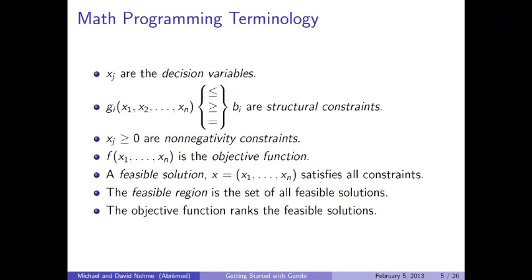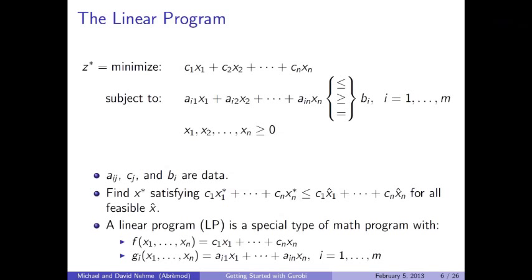A linear program is a special case of the mathematical program in which both the objective function F and the functions in the constraints are required to be linear in the decision variables. The variable coefficients A and C, as well as the right-hand side B, are fixed data known ahead of time. Our goal is to find an optimal solution X* such that when evaluated by the objective, it produces a value no greater than any other feasible solution — assuming minimization. There may be multiple solutions achieving the same minimum value, and a solver is required to return any one of them.